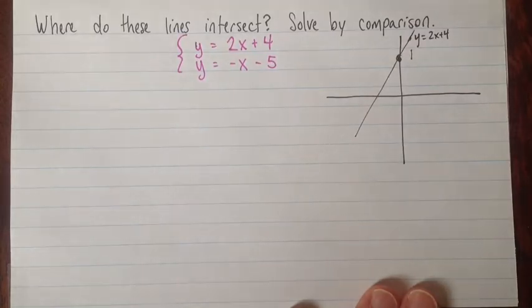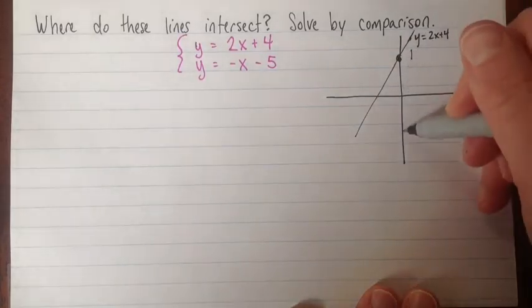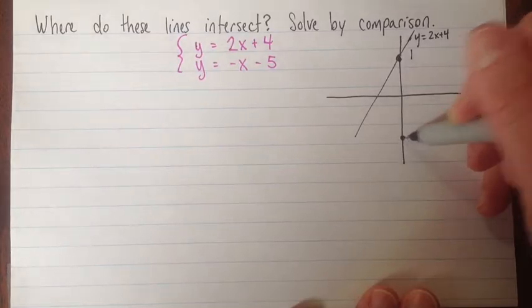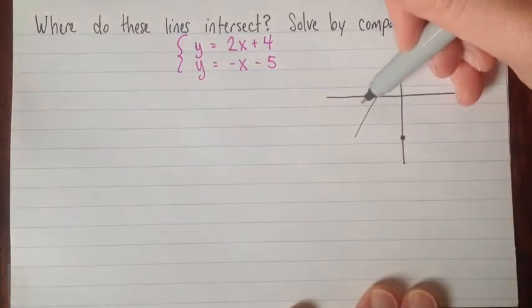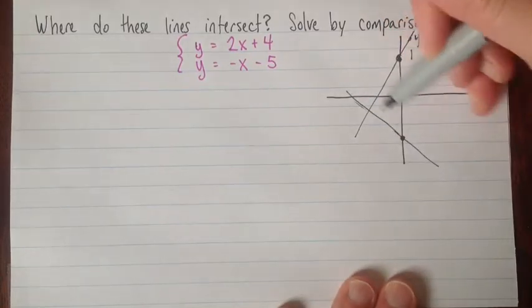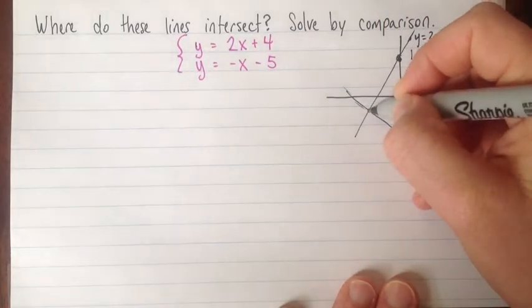And then my other equation is y equals negative x, take away 5. So my y intercept is negative 5. And my slope is negative 1. So we'll go up 1 and back 1. So this is just definitely just a sketch.